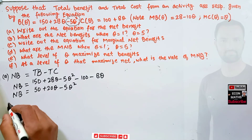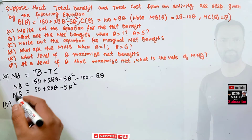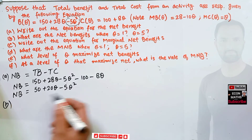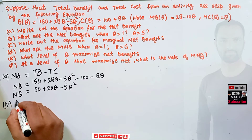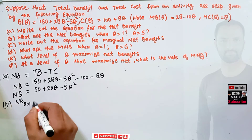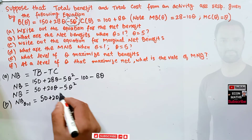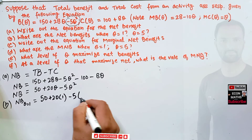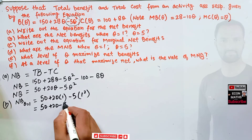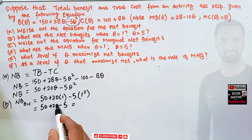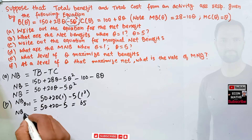Part B asks for net benefits when Q equals 1 and Q equals 5. First, net benefit when Q = 1: we insert Q = 1 into the equation. We have 50 + 20(1) - 5(1²) = 50 + 20 - 5 = 65. So net benefit when Q = 1 is 65.